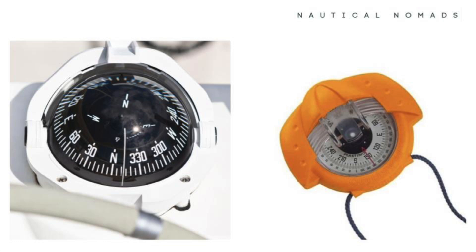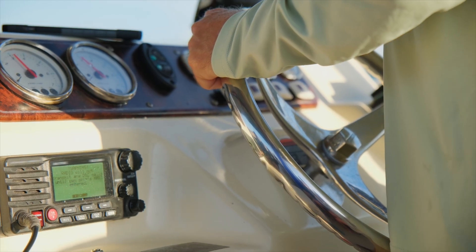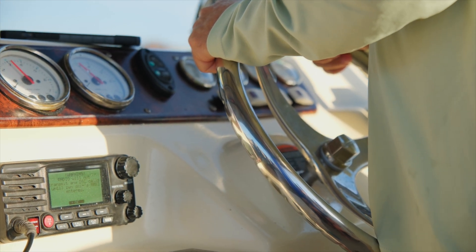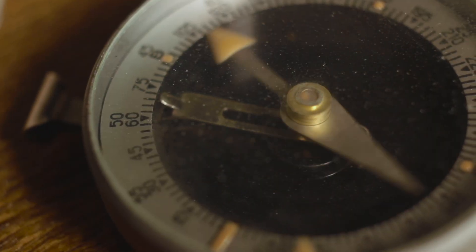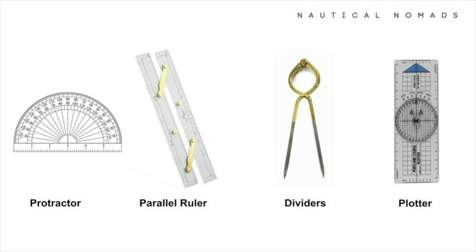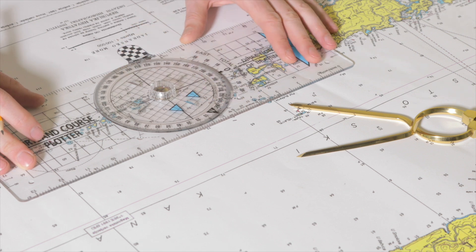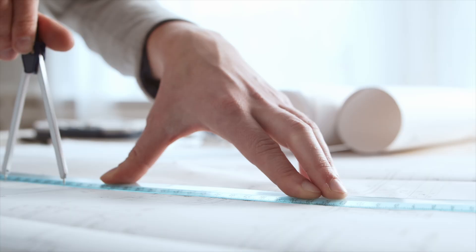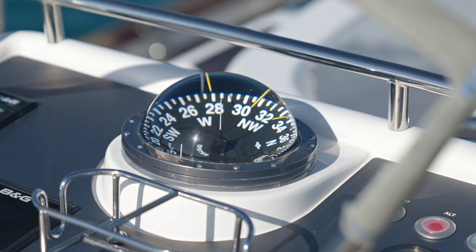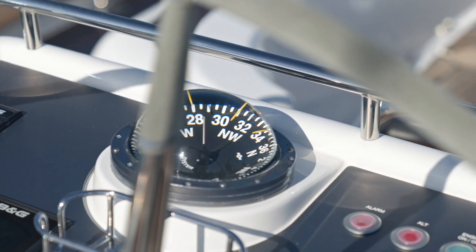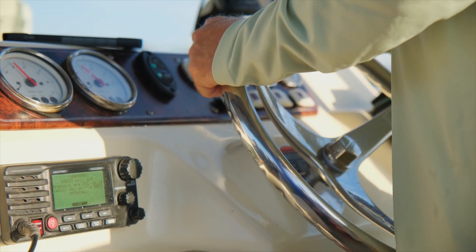We delved into the tools of navigation, focusing on compasses. Magnetic compasses are simple and reliable but require correction for variation and deviation. Advanced compasses like fluxgate or gyro compasses offer precision and integration with modern systems but rely on power. Correcting errors — magnetic variation caused by the Earth's magnetic field and deviation caused by interference from your vessel — is crucial. We also looked at chart tools such as protractors, parallel rulers, and plotters. By combining knowledge of direction with the right tools, correcting for errors, and staying aware of external forces, you'll build confidence and skill whether at sea, hiking, or exploring new terrains.